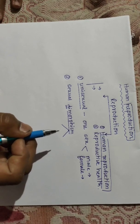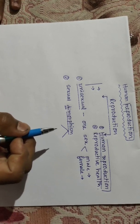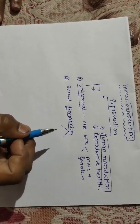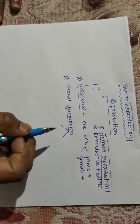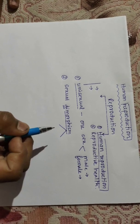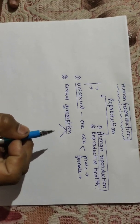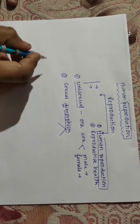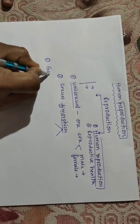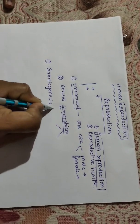Human reproduction takes place in certain phases. The total reproductive process in the case of human beings takes place in nine phases. Now we will discuss what those nine phases are. The first phase of human reproduction is gametogenesis.